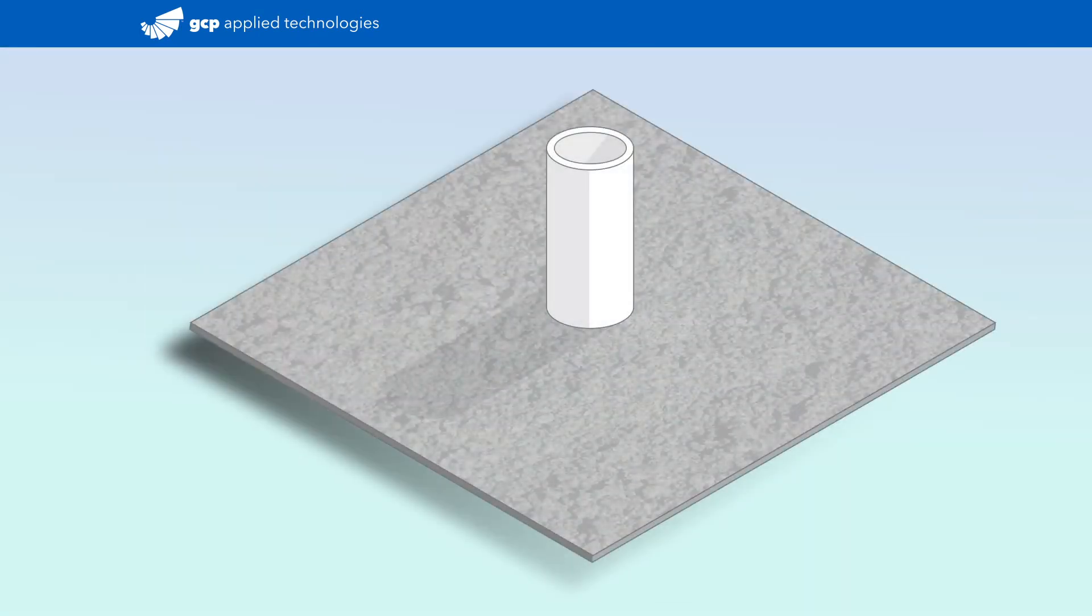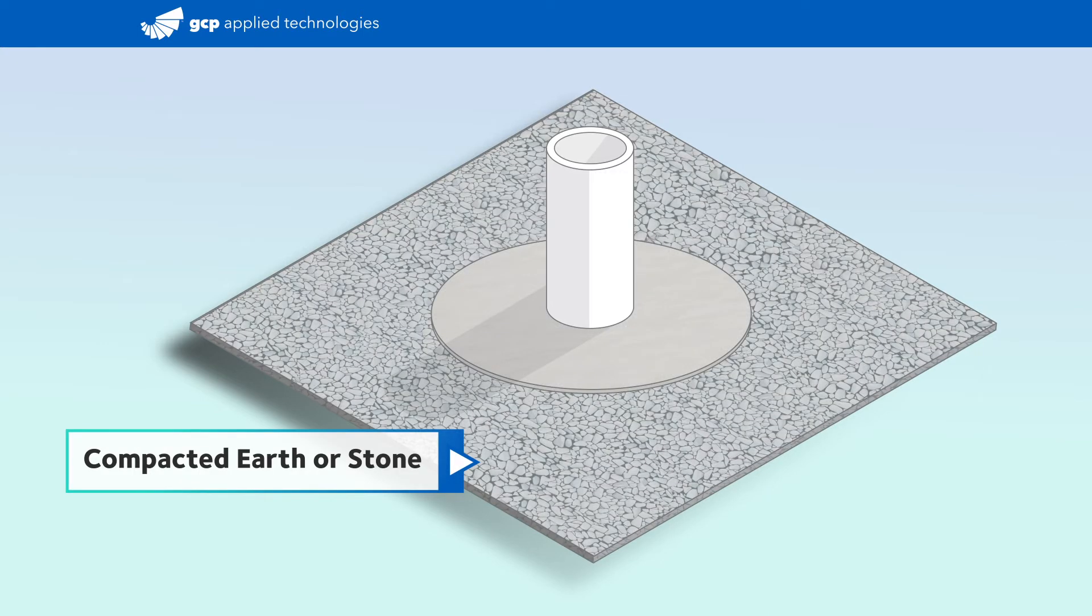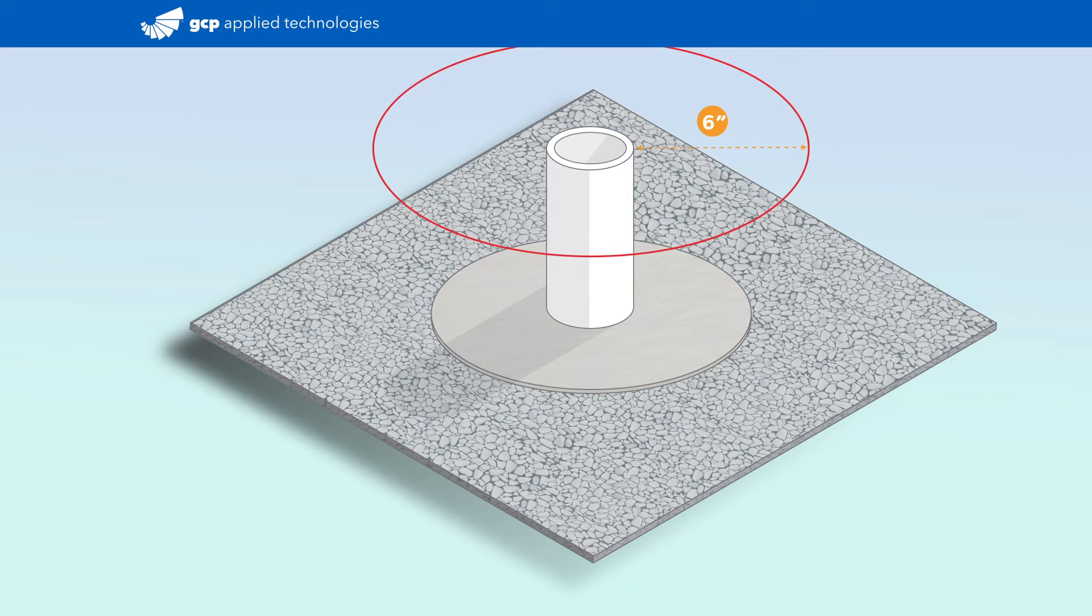The first step is ensuring you have a proper substrate, either a mud slab or compacted earth or stone. Ensure the penetrations are at least 6 inches apart. If your conditions differ, consult your GCP representative for guidance.